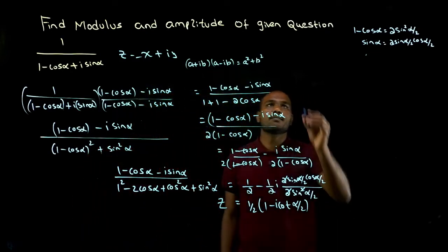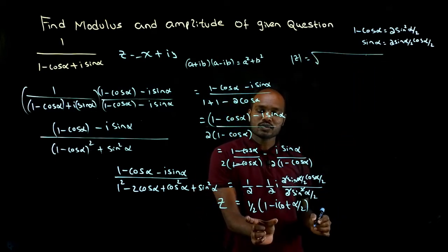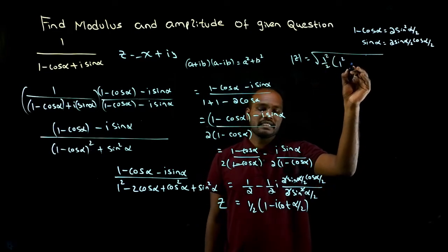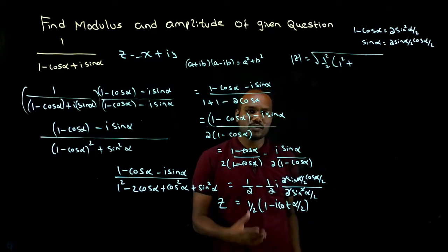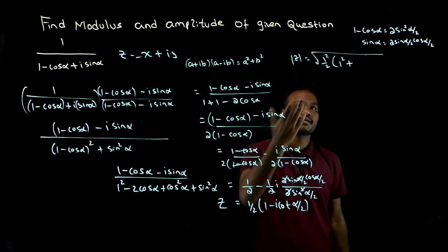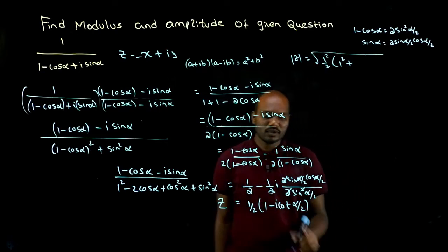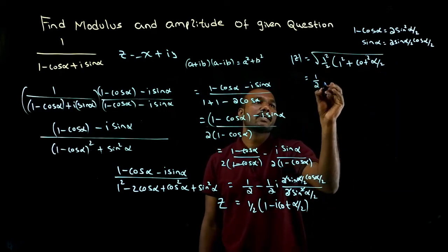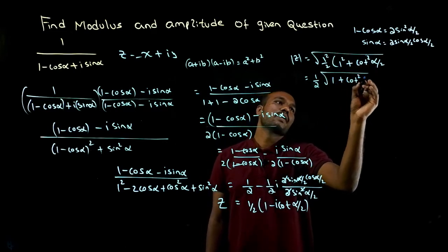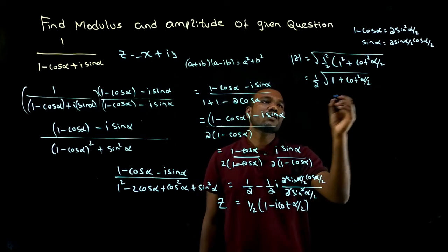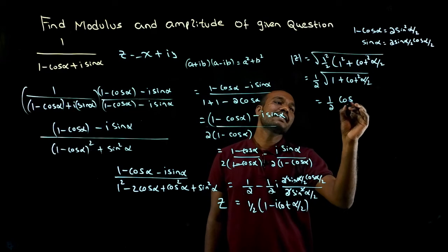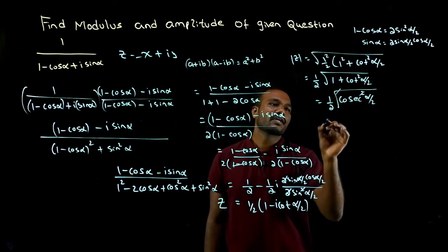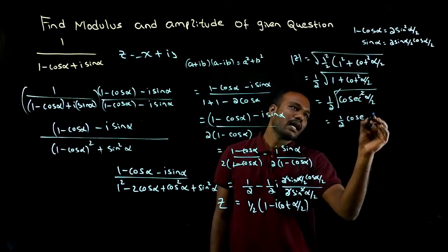To find the modulus, mod z equals the square root of x squared plus y squared. So we have one by two whole square times one squared plus cot squared alpha by two, under the root. Taking one by two outside the root, we get one by two times the square root of one plus cot squared alpha by two. Since one plus cot squared theta equals cosecant squared theta, the square root and square cancel, giving mod z equals one half times cosecant alpha by two.